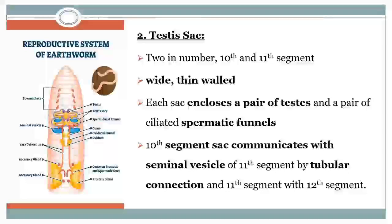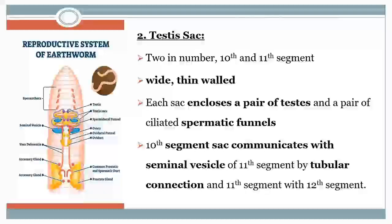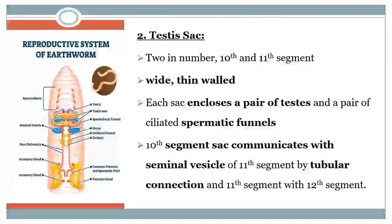The 11th testes sac is larger in size than the 10th one because it encloses the seminal vesicles. The seminal vesicles are present in the 11th and 12th segments. So in the 11th testes sac, which encloses the testes, spermatogonia, as well as the seminal vesicle, it is larger in size as compared to the first one.